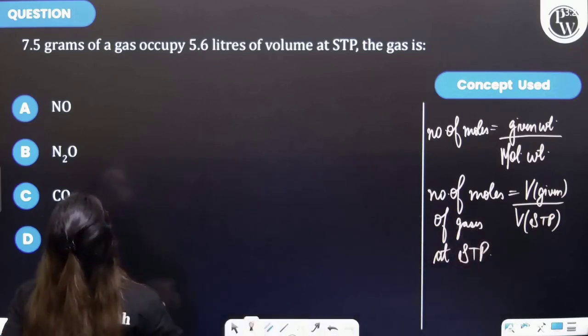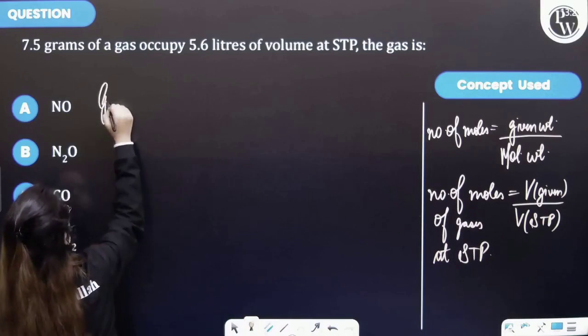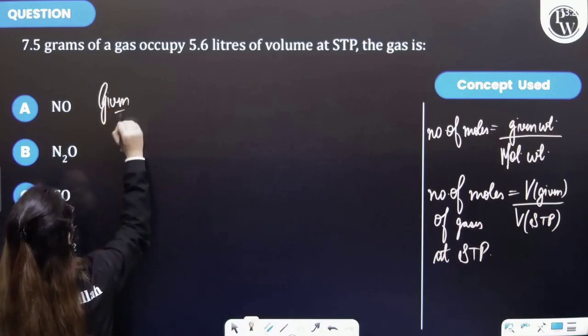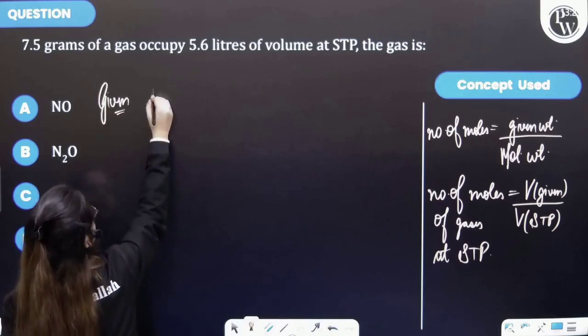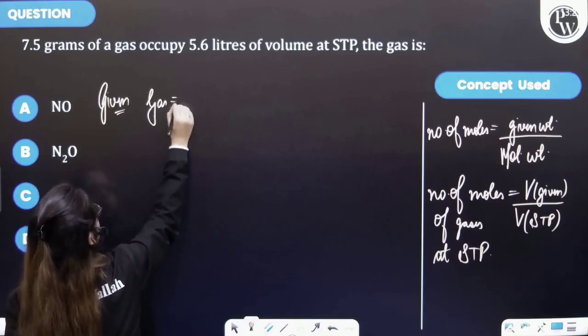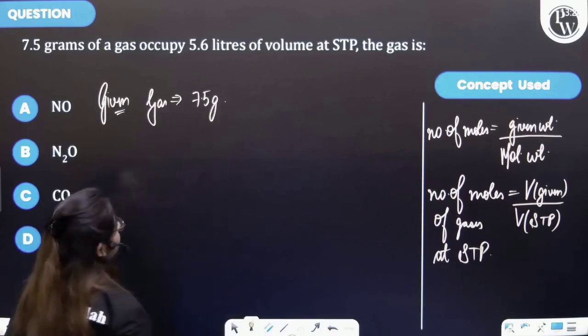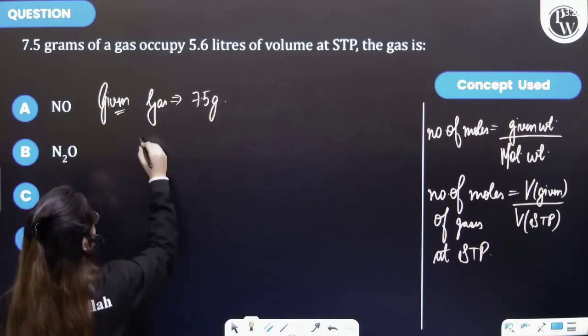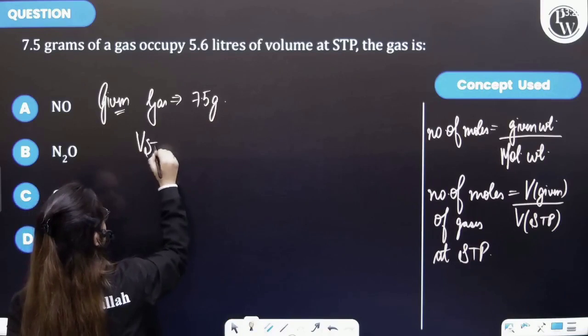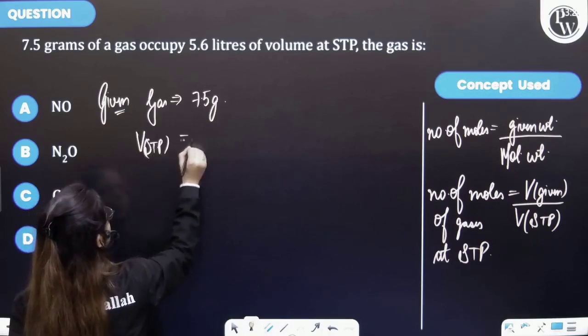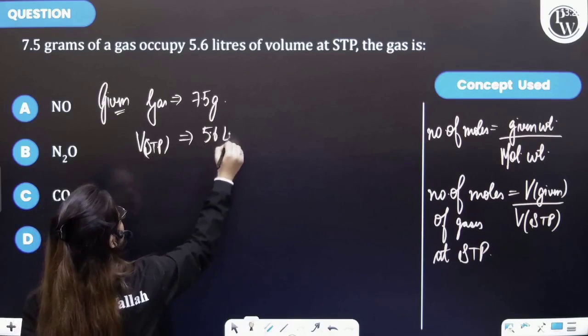So in the question, firstly let's write the given things to us. 7.5 grams of a gas. The mass given is equal to 7.5 grams. And then volume at STP is 5.6 liters.